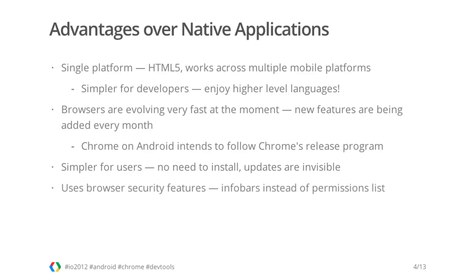From the security standpoint, websites provide a different model than native applications. They run in a browser sandbox. The user is asked by the browser to confirm a permission for an action — for example, to access the user's location — as soon as the action takes place, instead of providing a long list of permissions during application installation that nobody usually takes care of.